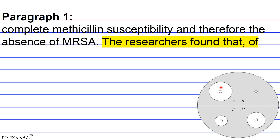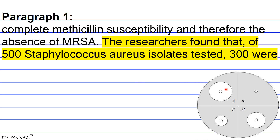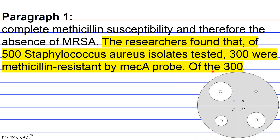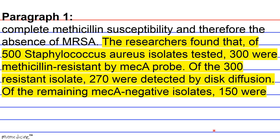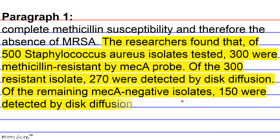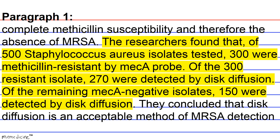The researchers found that of 500 Staphylococcus aureus isolates tested, 300 were methicillin-resistant by mecA probe. Of the 300 resistant isolates, 270 were detected by disc diffusion. Of the remaining mecA-negative isolates, 150 were detected by disc diffusion. They concluded that disc diffusion is an acceptable method of MRSA detection in under-resourced laboratories.